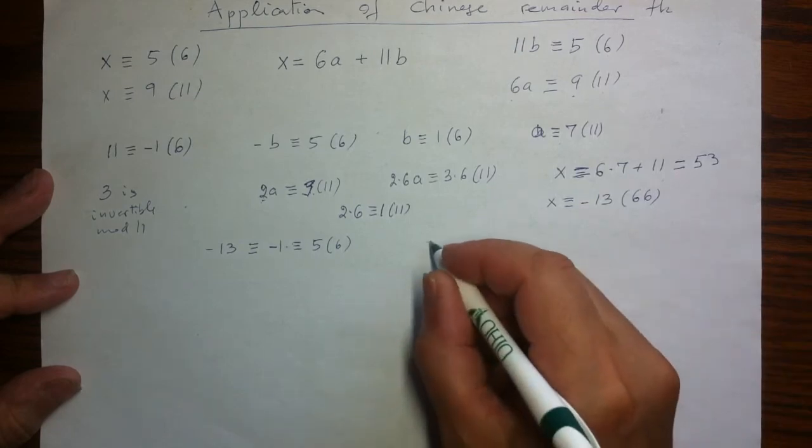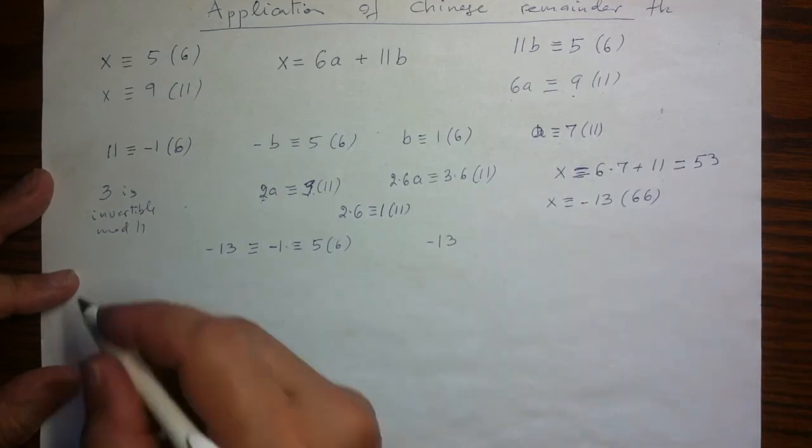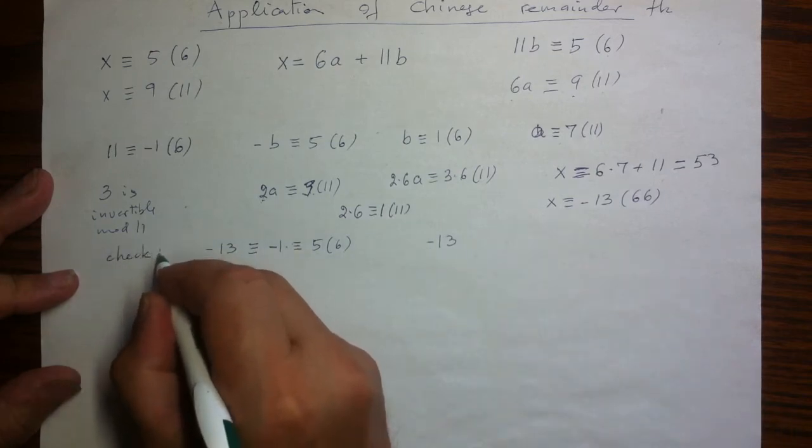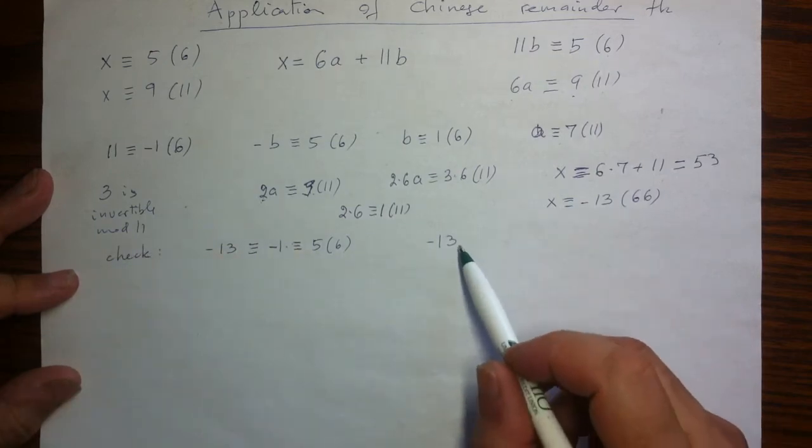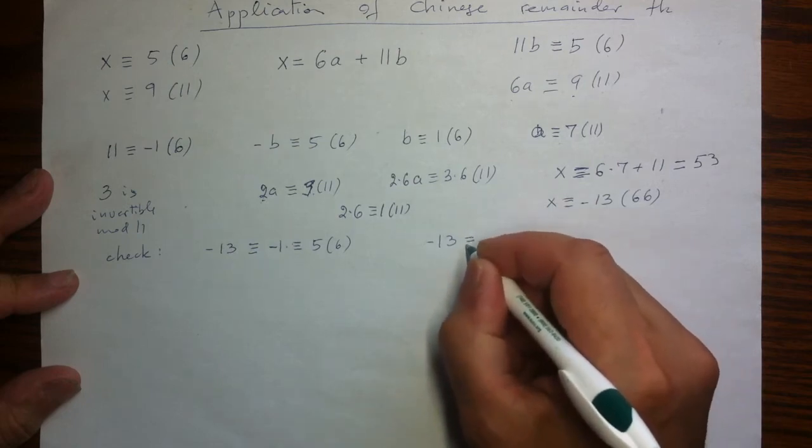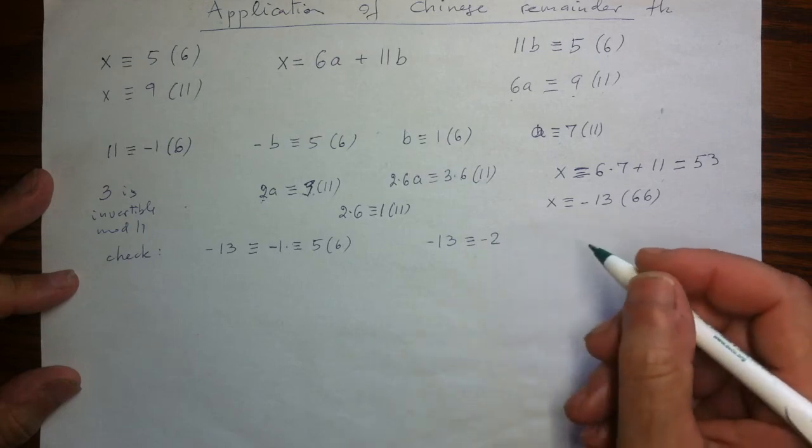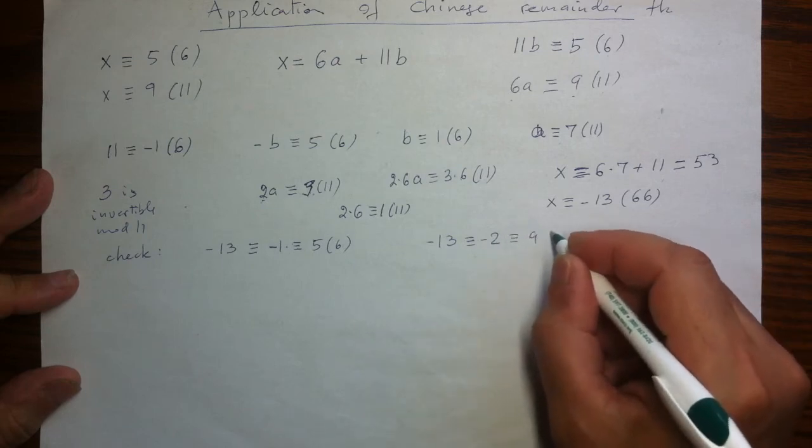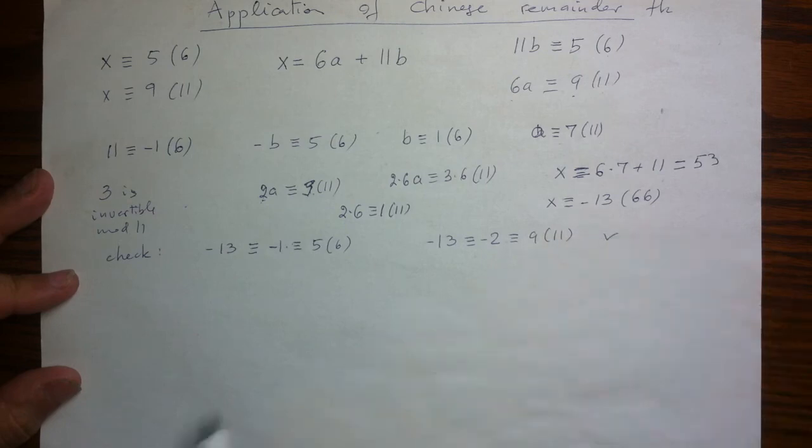Modulo 11, negative 13 is, so this is performing the verification, is as good as negative 2. But negative 2, adding another copy of 11 is the same as 9. So I have both conditions met. I've solved my problem.